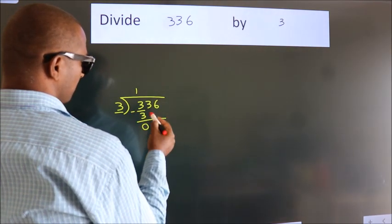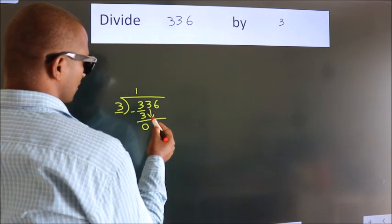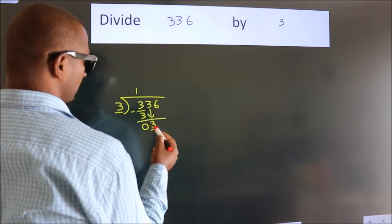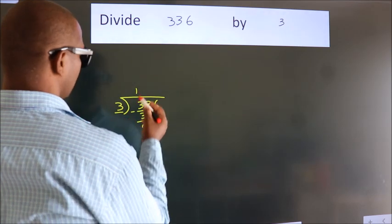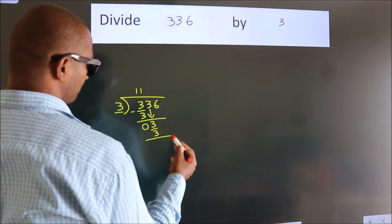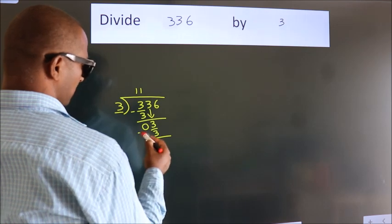After this, bring down the beside number. So, 3 down. When do we get 3? In the 3 table, 3 once is 3. Now, we subtract. We get 0.